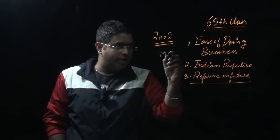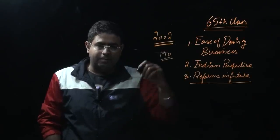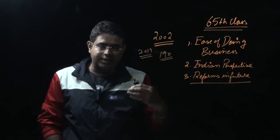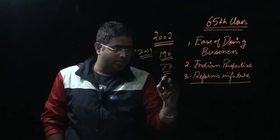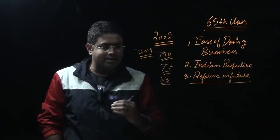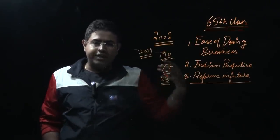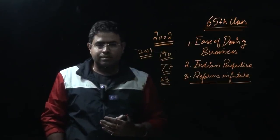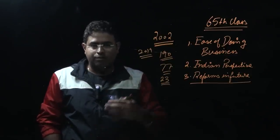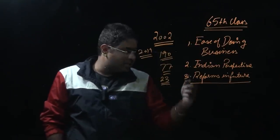World Bank has created an index of 190 nations, and in the present 2019 report, India has taken a jump from rank 100 to rank 77. We have improved about 23 ranks. There are still 76 countries ahead of India where it is easier to conduct business. Now, what are the parameters on which India has done good and what parameters still need reforms?